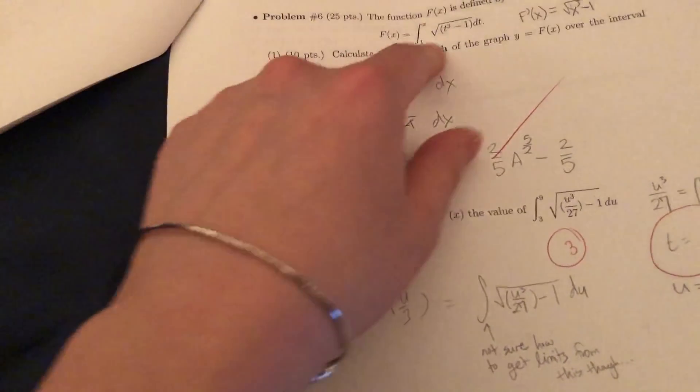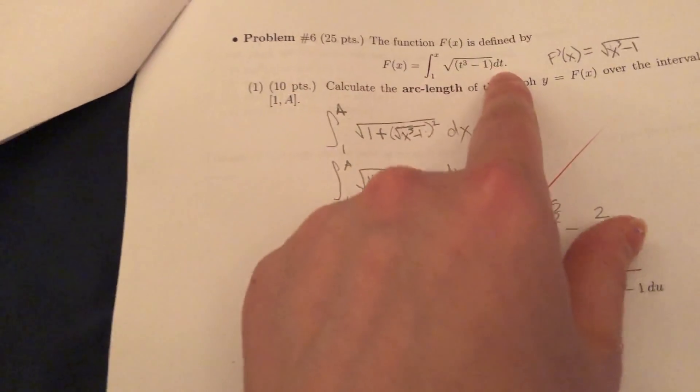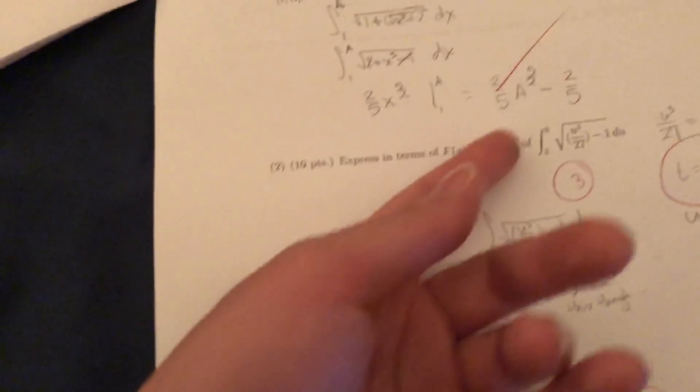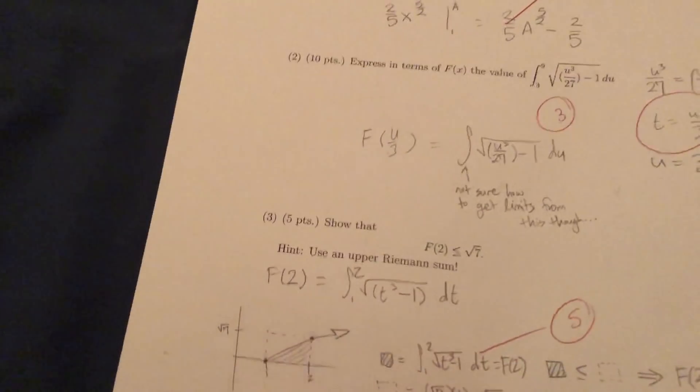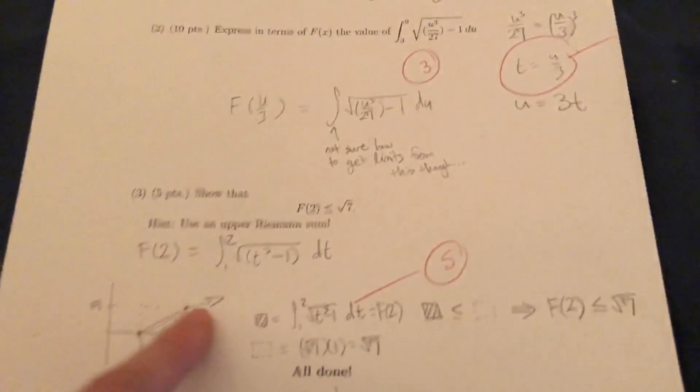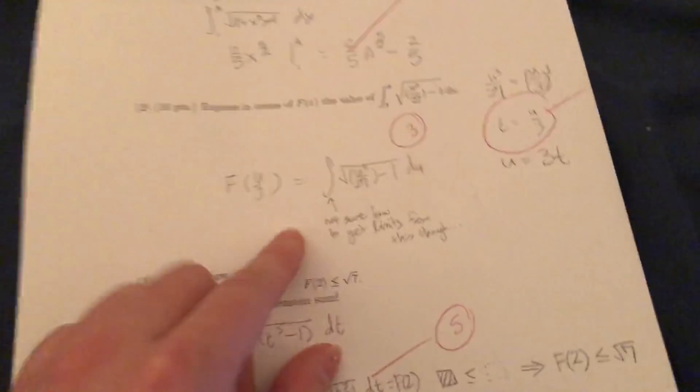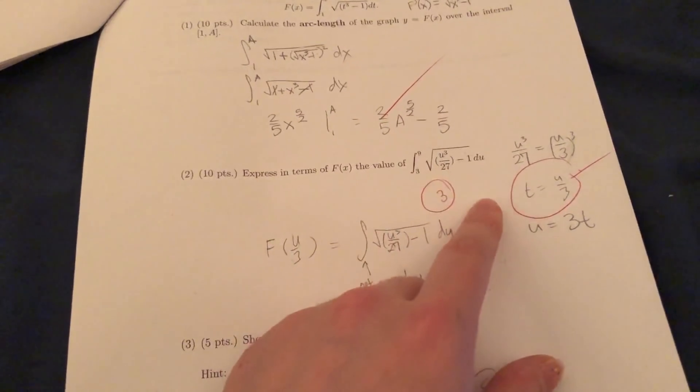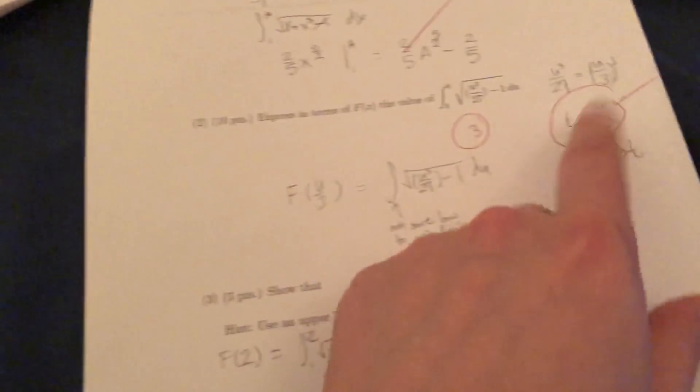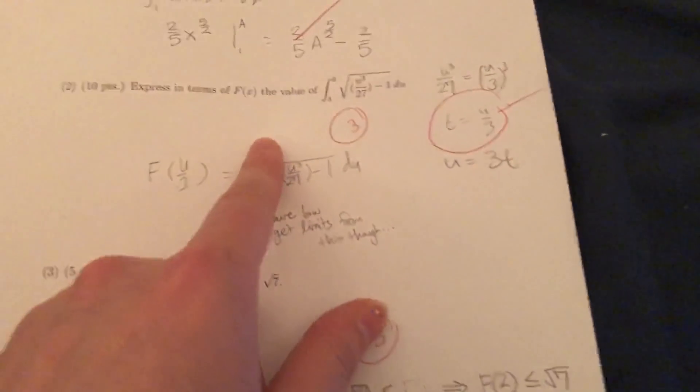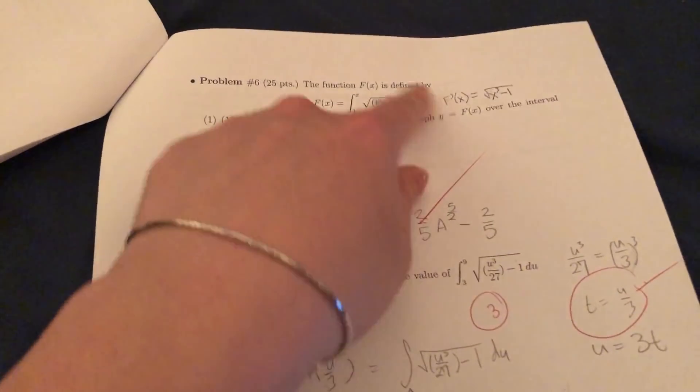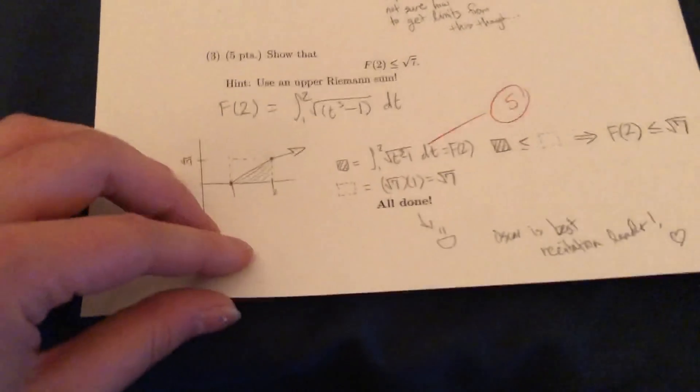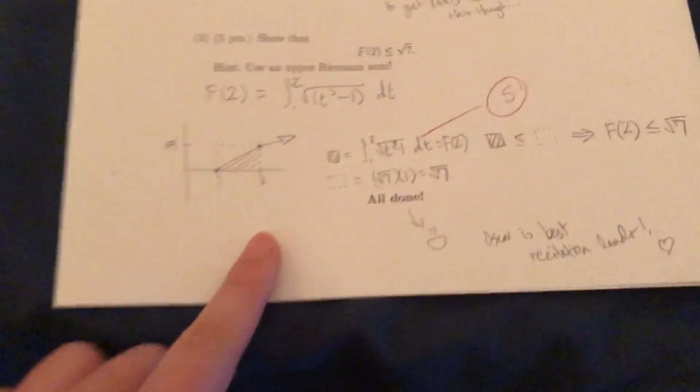Problem six, the function f of x is defined by this and calculate the arc length. Right. So arc length formula looks like I did that one right. And then this one, I didn't do so well on this one. Hmm. Yeah. Express in terms of f of x, the value of this. So I had to like, ooh, yeah, that was a little tricky there. So you had to look at this and see how it relates to this. This looks easier now, but back then this was like hard.